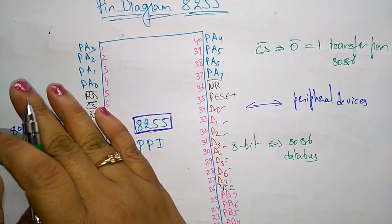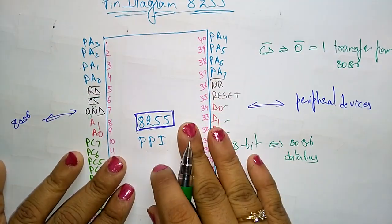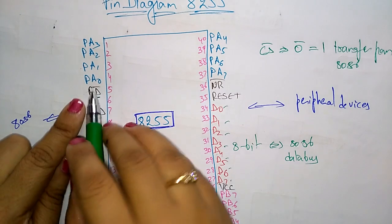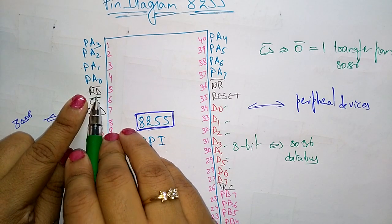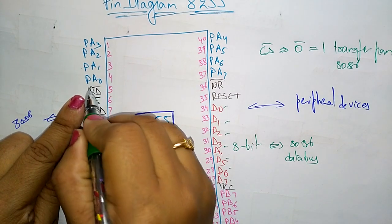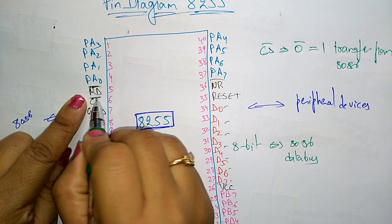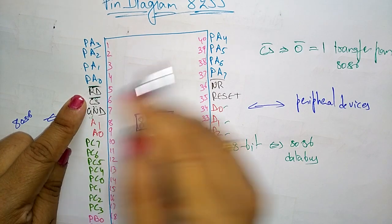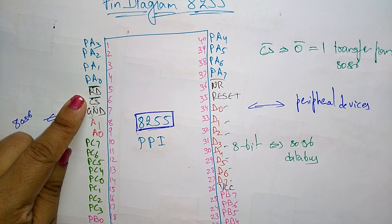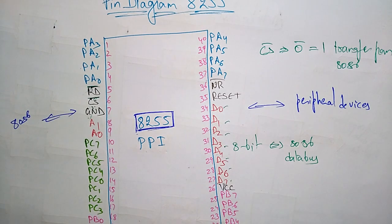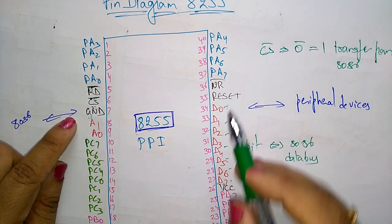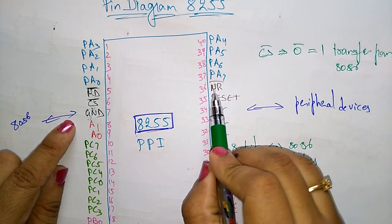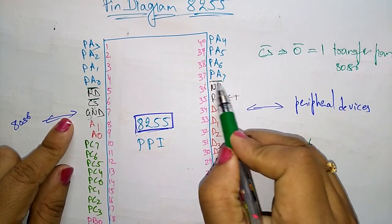Next is the read signal RD bar. This is an active low signal — when it is low, the read operation starts. Similarly, WR bar is also an active low pin — when it is low, the write operation starts.